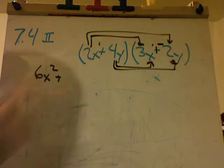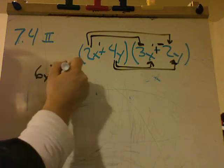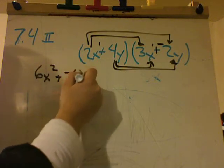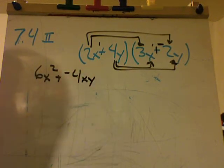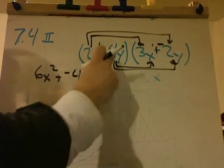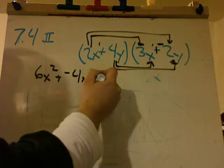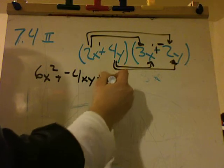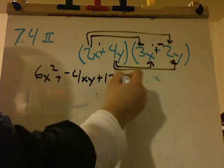Now I'm going to take 2x times this negative 2y, which is negative 4xy. Now I'm going to take 4y times 3x, which is 12yx.